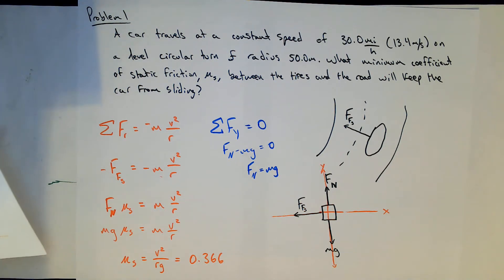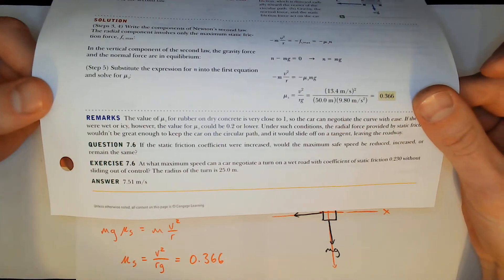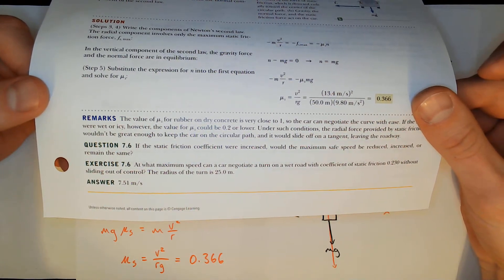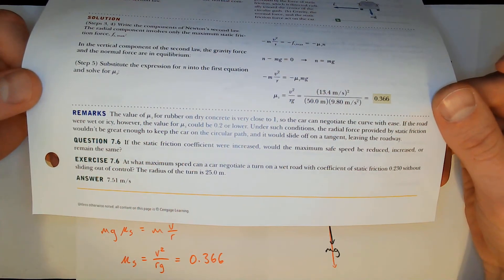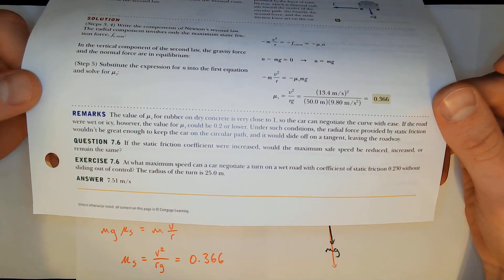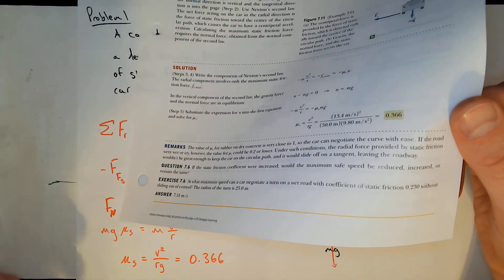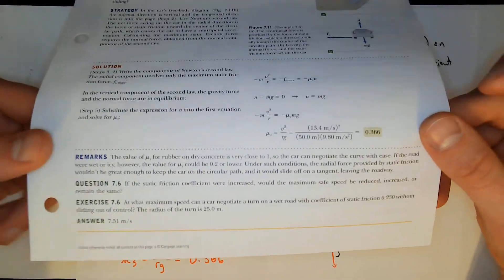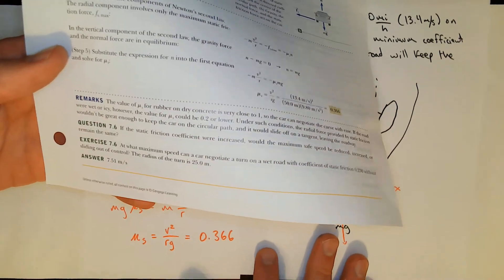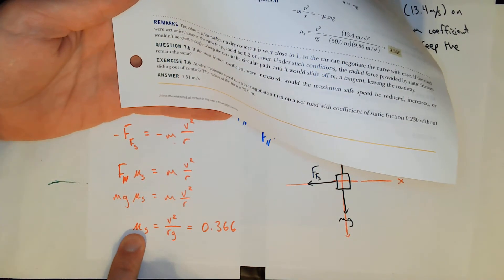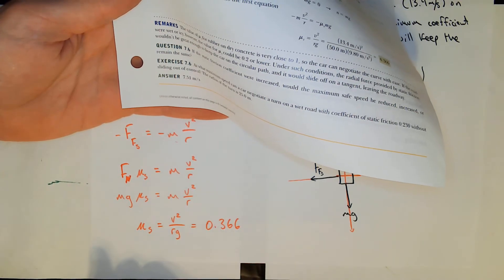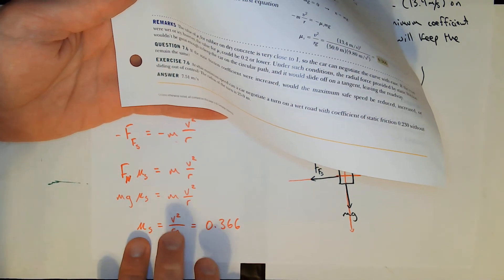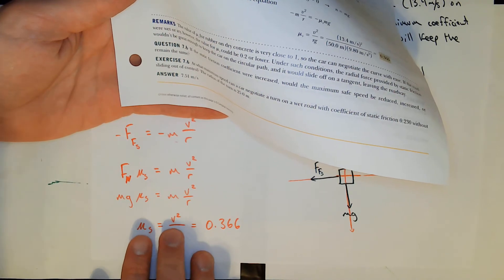A follow-up question asks: if the static friction coefficient were increased, would the maximum safe speed be reduced, increased, or remain the same? It would be increased, because from μ_s = v²/(rg), if μ_s increases and r stays the same, v² must also increase. These two quantities are directly related, not inversely.